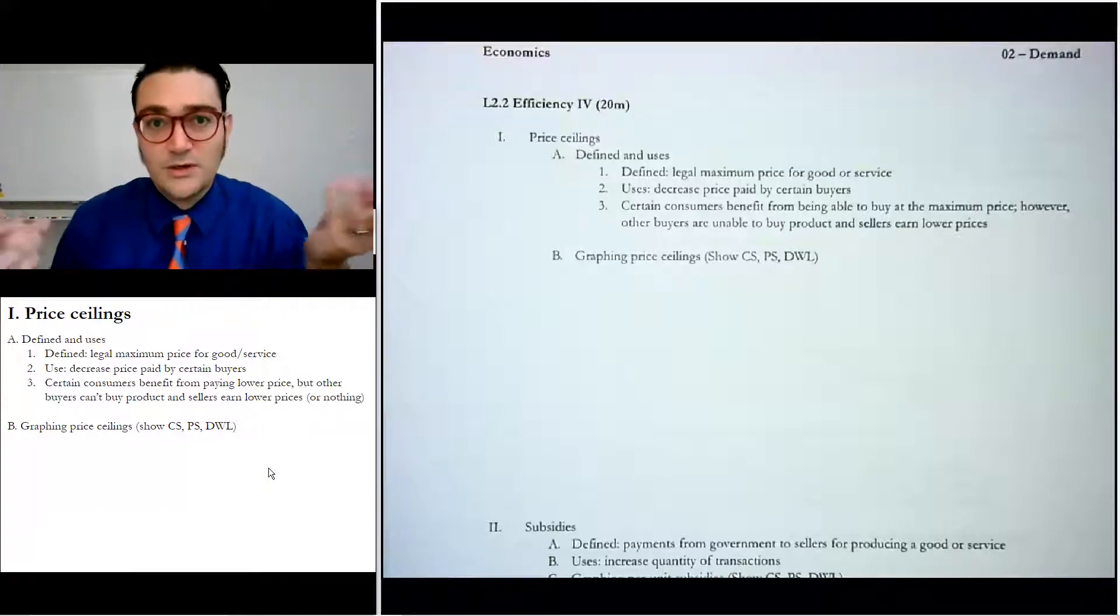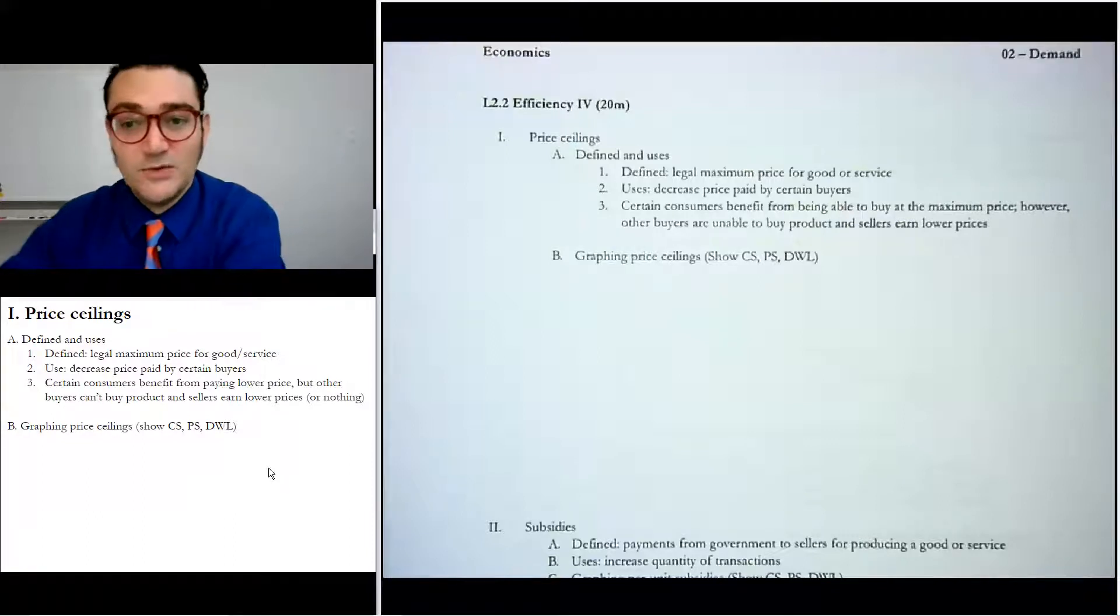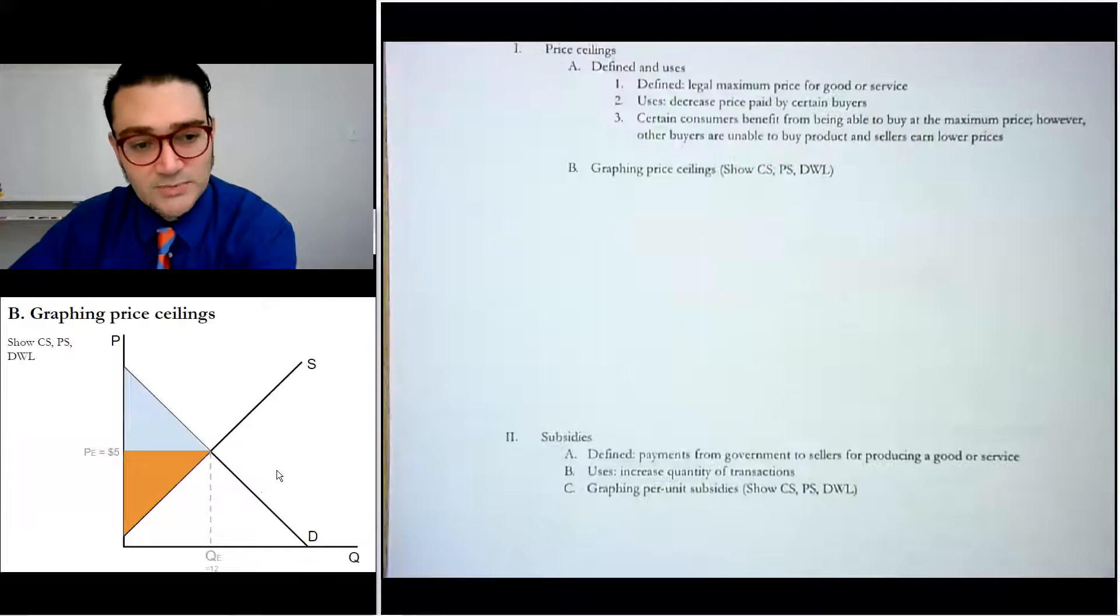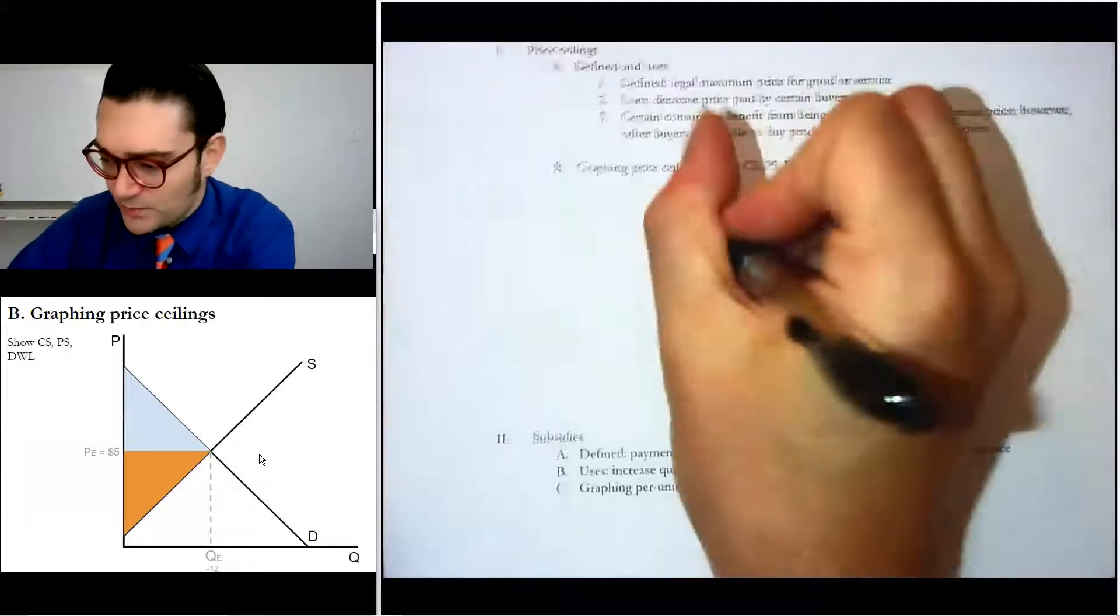The ones who are able to sell at the lower price are hurt, and then there's some sellers who are left out in the cold. So that's our original picture of consumer and producer surplus, but we'll take a look at how it transforms with a price ceiling.